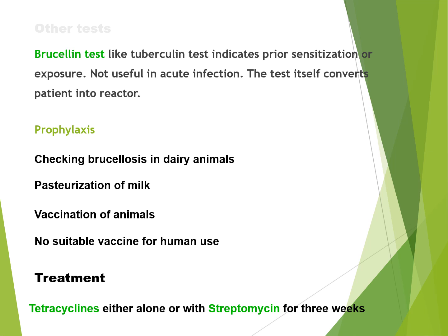Prophylaxis involves checking brucellosis in dairy animals, pasteurisation of milk, and vaccination of animals. No suitable vaccine is currently available for human use. For treatment, tetracyclines can be used either alone or combined with streptomycin for three weeks.